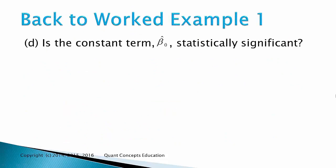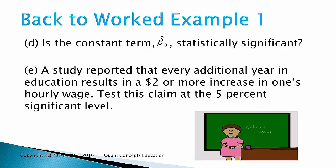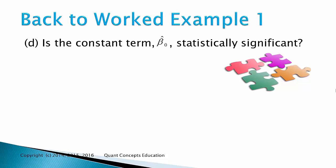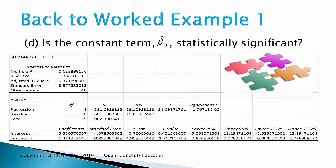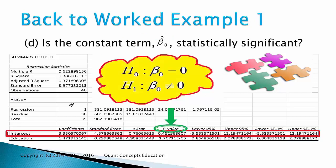Back to our worked example. Part D: is the constant term beta hat 0 statistically significant? That is, is the estimate for beta hat 0 too close to 0, or is it far enough from 0 for us to conclude that the population intercept term is indeed non-zero? And Part E: a study reported that every additional year in education results in a $2 or more increase in one's hourly wage — test this claim at the 5% significance level. This is a classic hypothesis testing problem which we'll go through step by step. Looking at the regression output, because we're talking about beta 0, the intercept term, we look at that row and check the p-value, since Excel has already tested for statistical significance of the beta coefficients by default.